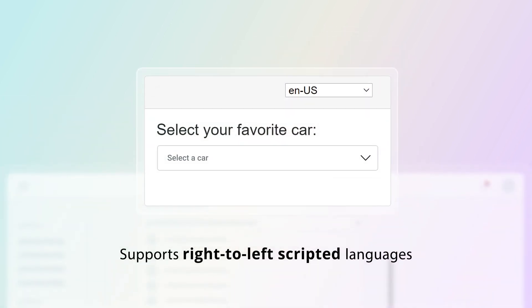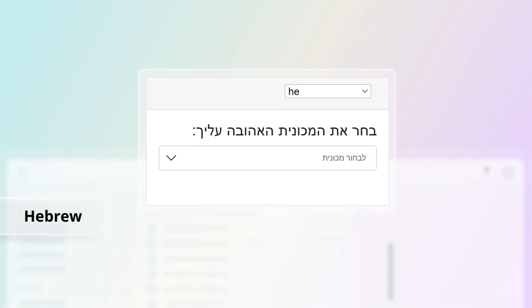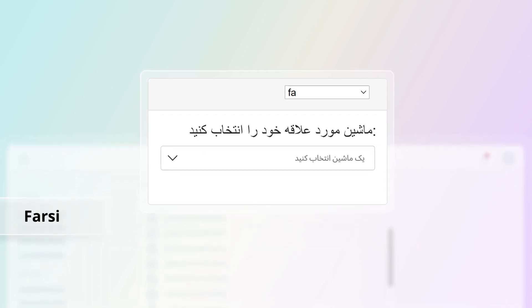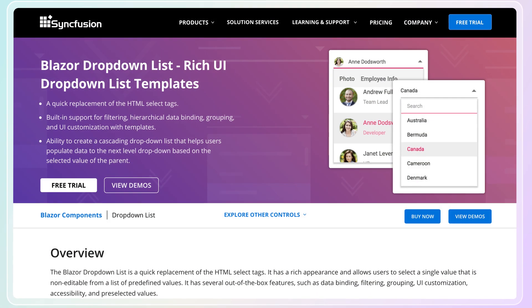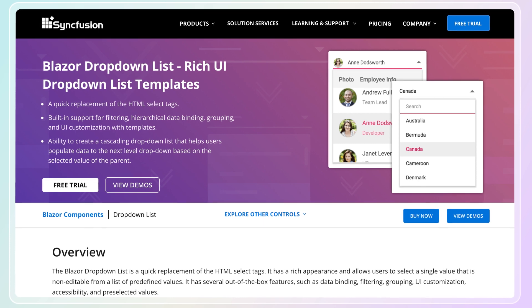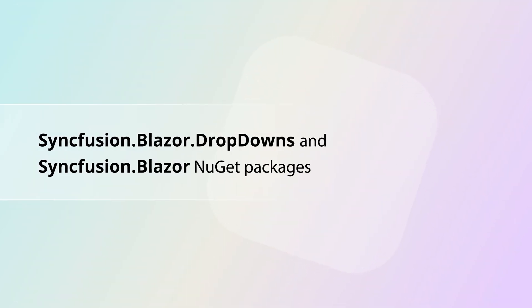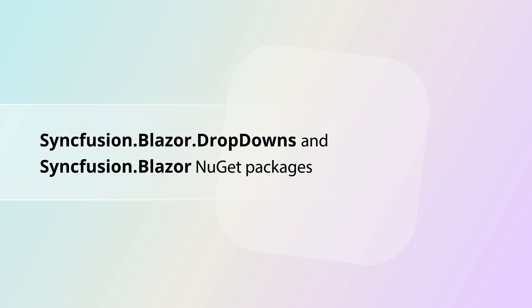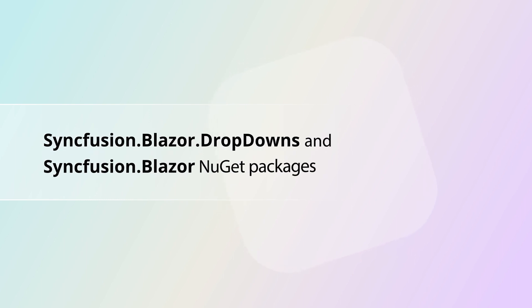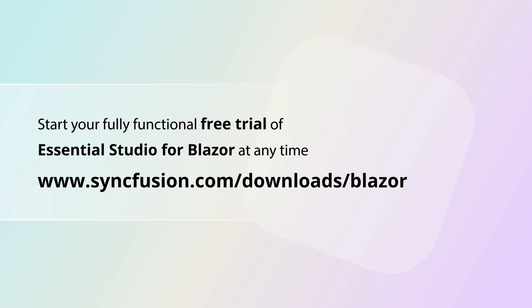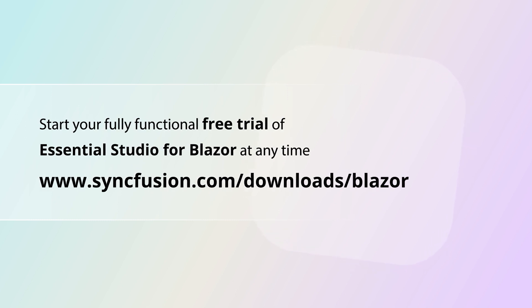It supports right-to-left scripted languages like Hebrew, Arabic, and Farsi. The Syncfusion Blazor drop-down list component is available in the syncfusion.blazor.dropdowns and syncfusion.blazor NuGet packages. You can start your fully functional free trial of Essential Studio for Blazor at any time.